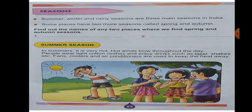There are three main seasons in India: summer, winter, and rainy seasons. But some places have two more seasons called spring and autumn. Find out the names of any two places where we find spring and autumn season, and write down the answers for number one and number two.